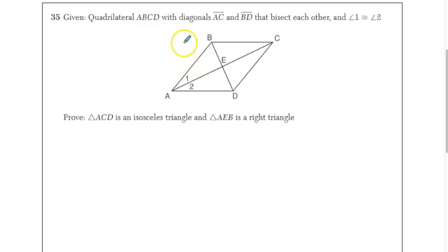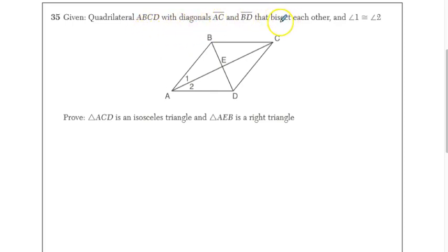This is a pretty tough proof, so bear with me here. Quadrilateral ABCD with diagonals AC and BD bisect each other. We know that angle 1 is congruent to angle 2 — those are our givens.